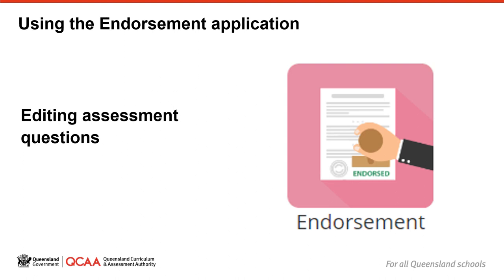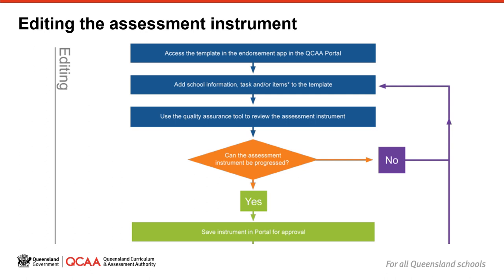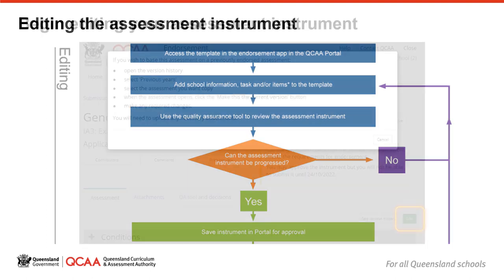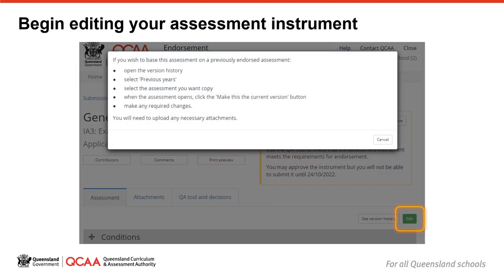Using the endorsement application – editing assessment questions. Now I'll talk you through the process of editing the assessment instrument in the template, using the endorsement workflow. To start to create the assessment instrument, click on the green edit button. If you've offered this subject before, you will see a pop-up on screen that asks if you'd like to copy across a previously endorsed assessment instrument when you first start to develop your assessment.